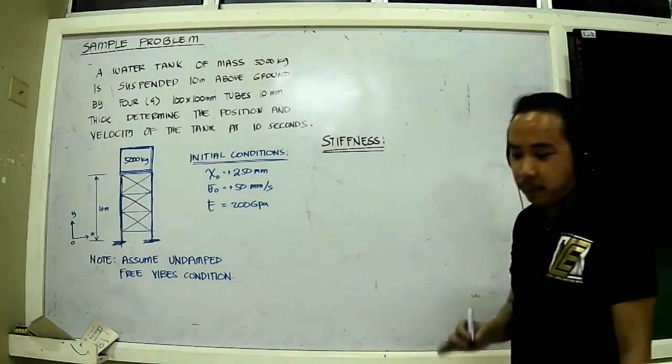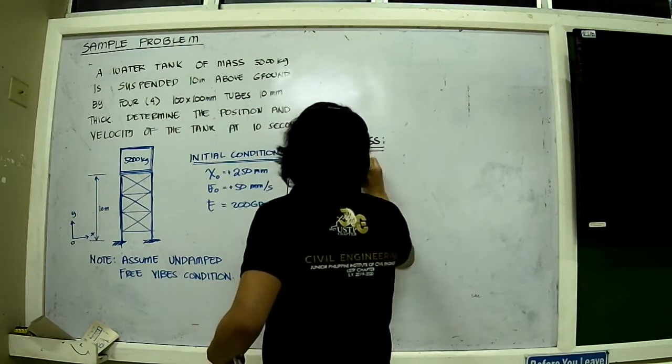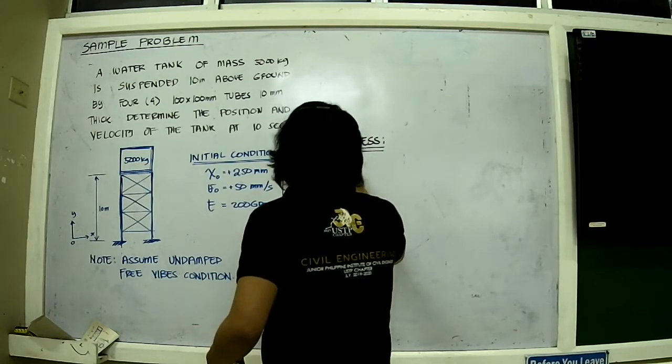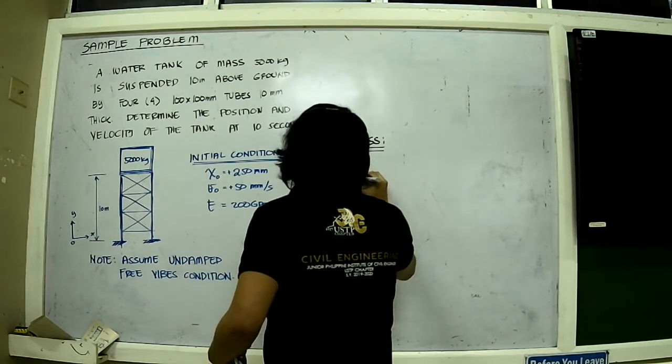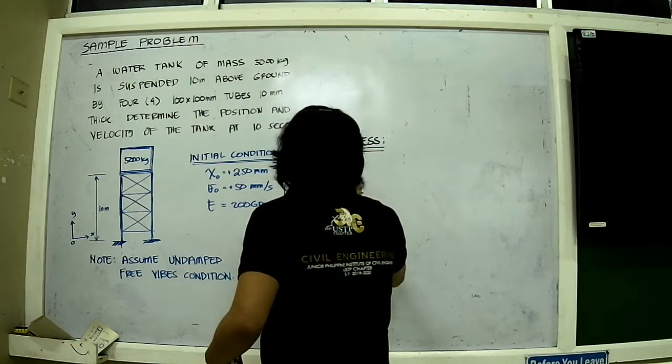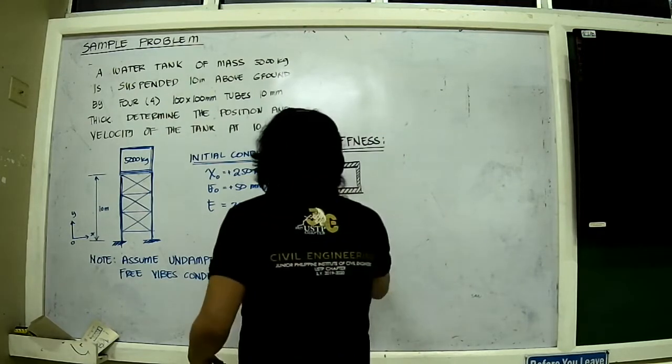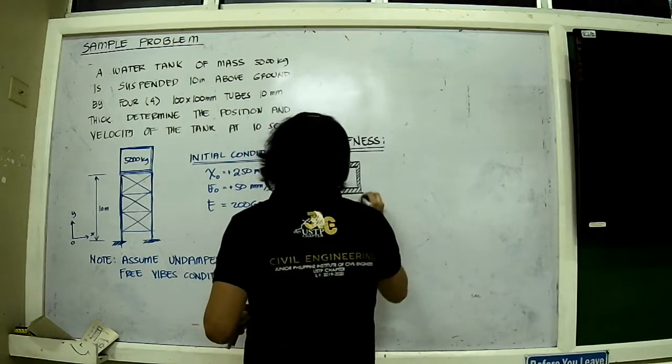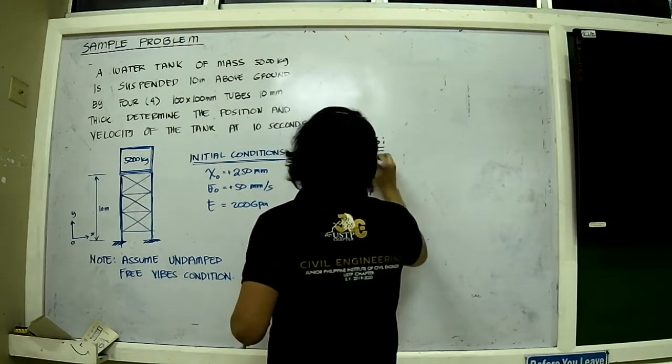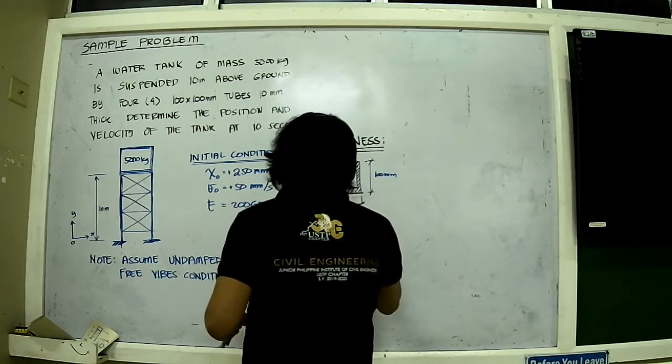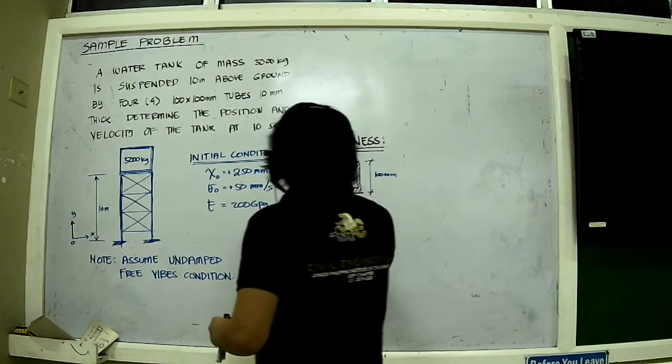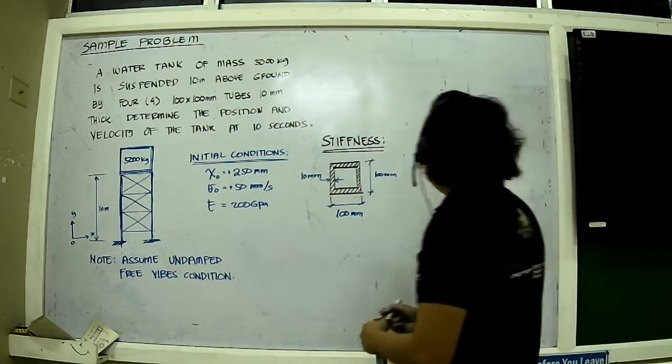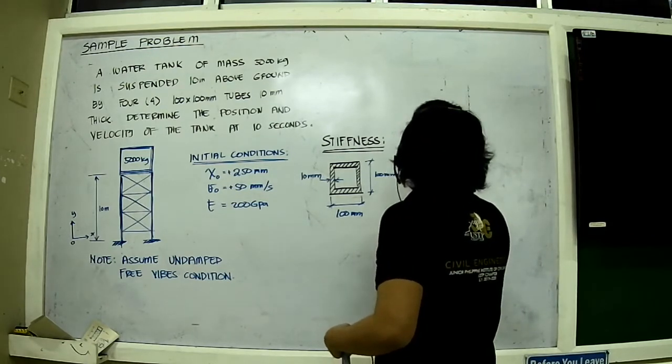When you say stiffness, we need to solve for the inertia first. Let's talk about inertia. We have a hollow section, 100 by 100, these are actually the outside measurements, with a thickness of 10 millimeters.